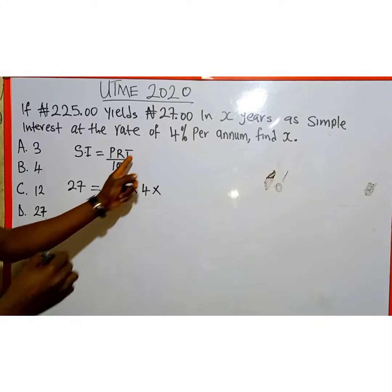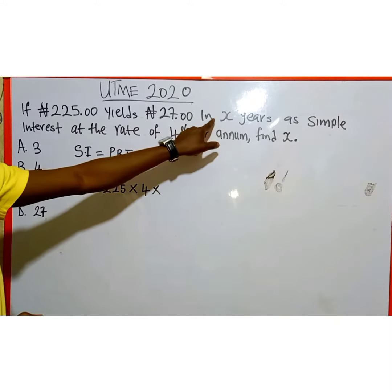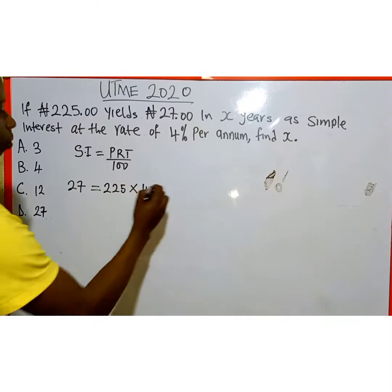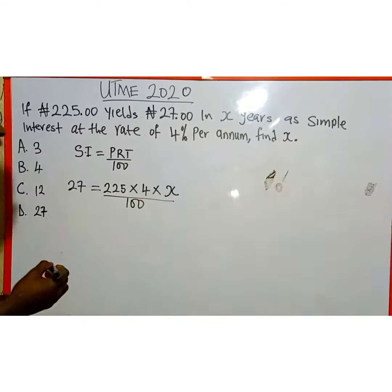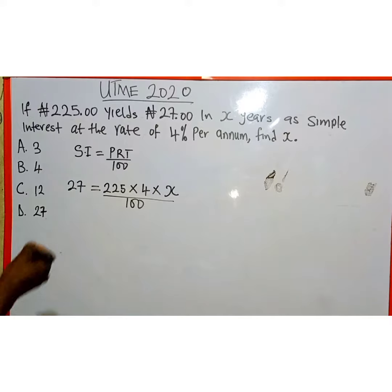Then multiply by time. Time is not given in X years, so multiply by X, then over the 100, which is constant from the formula.